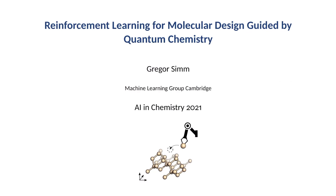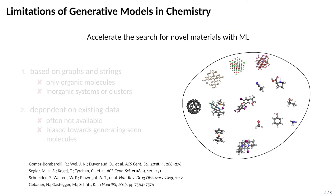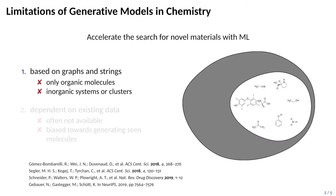Hello, my name is Gregor Sim, and today I would like to talk about our work on reinforcement learning for molecular design guided by quantum chemistry. The overarching goal is to accelerate the search for novel molecular structures with machine learning. Currently, so-called generative models in chemistry suffer from two key limitations. First, they are based on graph and string representations of molecules; as a result, they lack 3D information — the position of atoms in space — and can only generate single organic molecules. Inorganic systems and molecular clusters remain out of reach.